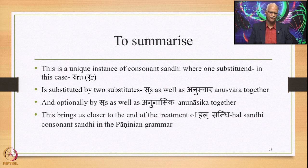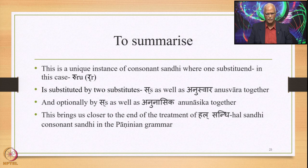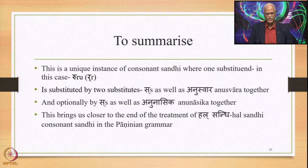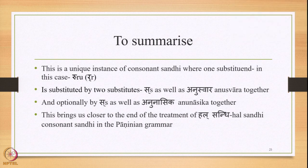To summarize: this is a unique instance of consonant Sandhi where one substituent — Ruh — is substituted by two substitutes, Sa and Anuswara together, and optionally Vaisa and Anunasika together. This brings us closer to the end of the treatment of Hal Sandhi in Paninian Grammar. In the next lecture we take a recap of the Hal Sandhi studied so far. Thank you for your patience.